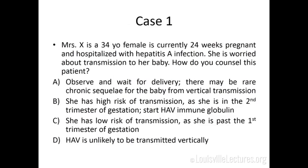Let's jump right into a case. Mrs. X is 34, she's 24 weeks pregnant, and she's hospitalized with hepatitis A infection. She's worried about transmission to her baby. How would you counsel this patient? Do you observe and wait for delivery, knowing there may be rare chronic sequela from vertical transmission? Do you think she has high risk because she's in the second trimester and should receive immune globulin? Or is this infection unlikely to be transmitted vertically?